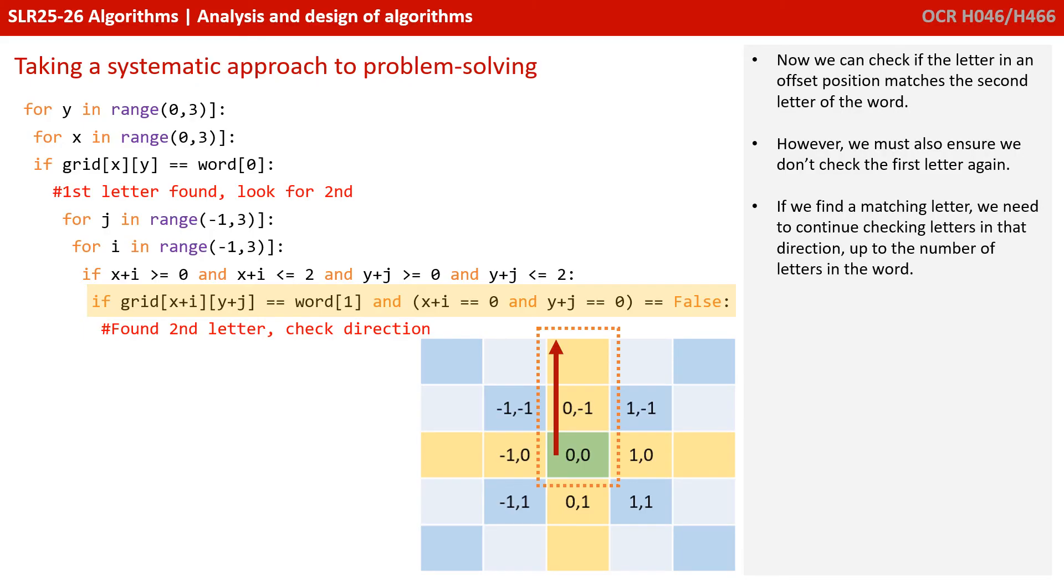So once we've found a second letter, we then simply need to carry on in that direction to see if we can find a third and then subsequent letters up to the length of the string that we're looking for. So if the second letter was in an upwards direction, then we'd continue checking upwards.